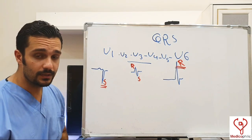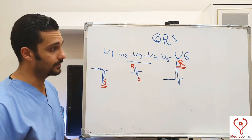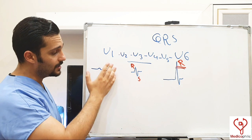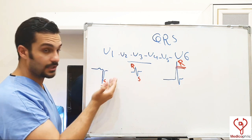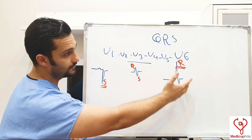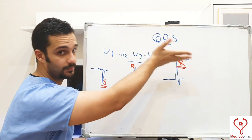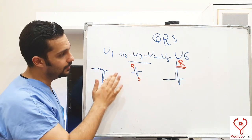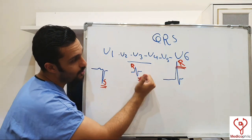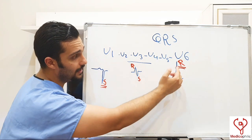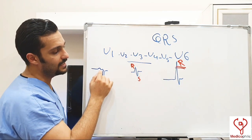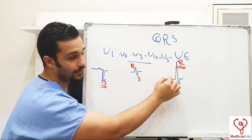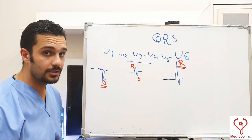It is important to know that QRS differs in V1 versus V6. In V1 the dominant wave is the S wave, which is negative. In V6 the dominant wave is the R wave, which is positive. As we move from V1 toward V6, the size of the S wave decreases and the size of the R wave increases. This is the normal situation.